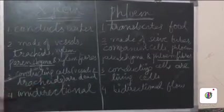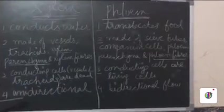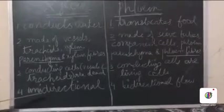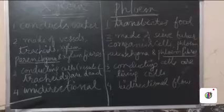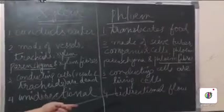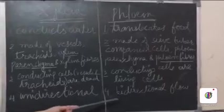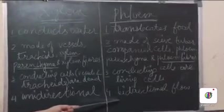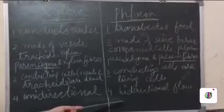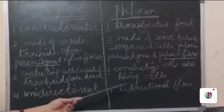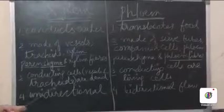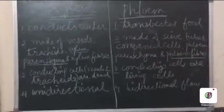Next, xylem has a unidirectional flow of water and mineral salts — from the roots to the various parts of the plant. In case of phloem, the flow is bidirectional. The food is prepared in the leaves of the plant and is translocated to the upper parts as well as the lower parts of the plant. Thank you children. God bless you all.